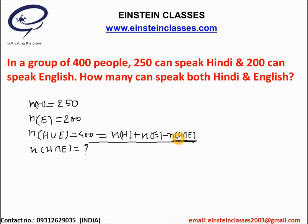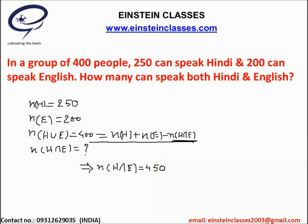Putting 250 and 200 together gives 450. From basic calculation, the value of the number of elements in H intersection E equals 450 minus 400, which comes out to 50. This is the total number of people who are speaking both Hindi and English.